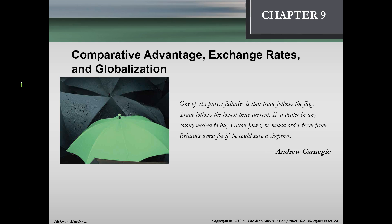In this lecture we're going to talk about comparative advantage, exchange rates, and globalization — chapter 9. We're going to start off with a quote from Andrew Carnegie. He was the owner of U.S. Steel, and at a time in the 19th century there was a lot of industrialization and a lot of competition. He had basically cutthroat competition and became one of the first monopolies.